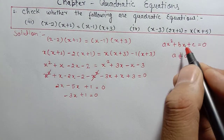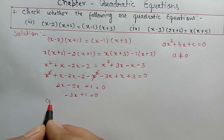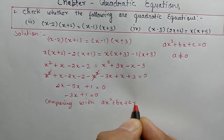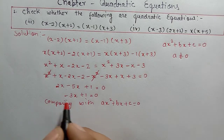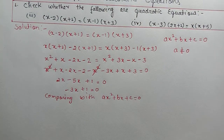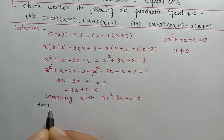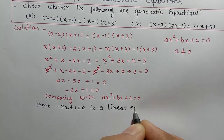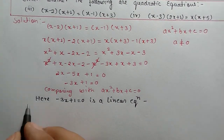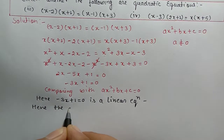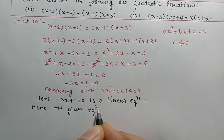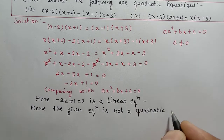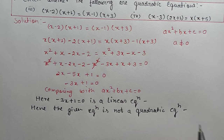Now we will compare this with ax² + bx + c = 0. Comparing with ax² + bx + c = 0: I mentioned that a should not be zero, but in this equation, the coefficient of x² is 0. So here, minus 3x + 1 = 0 is a linear equation. Hence, the given equation is not a quadratic equation.